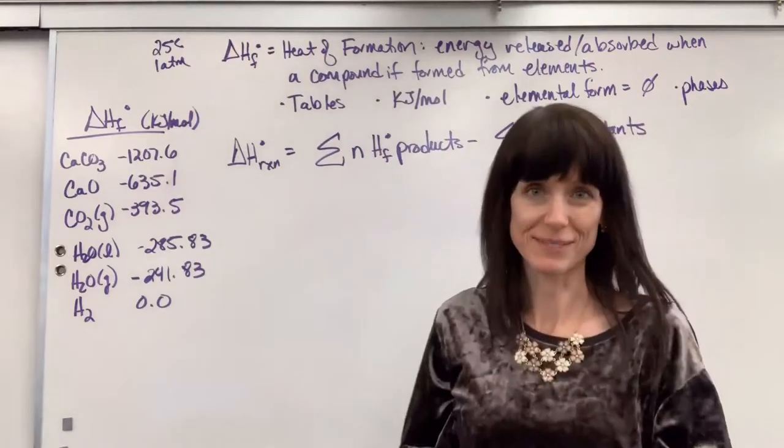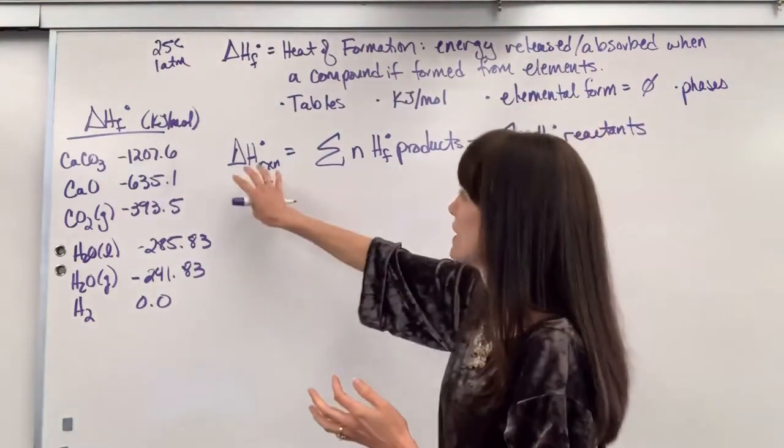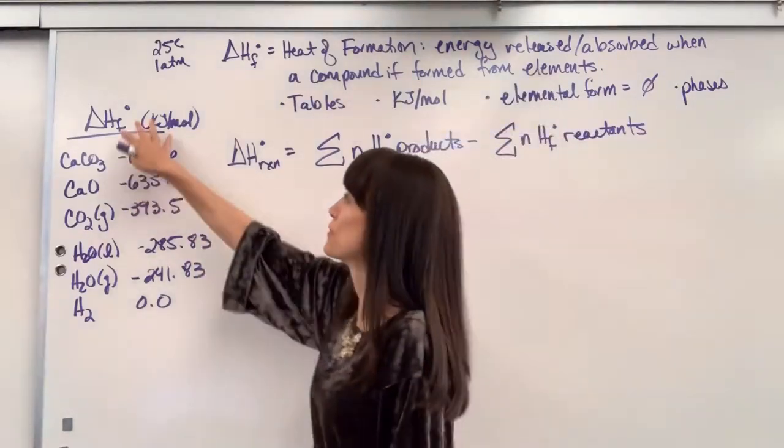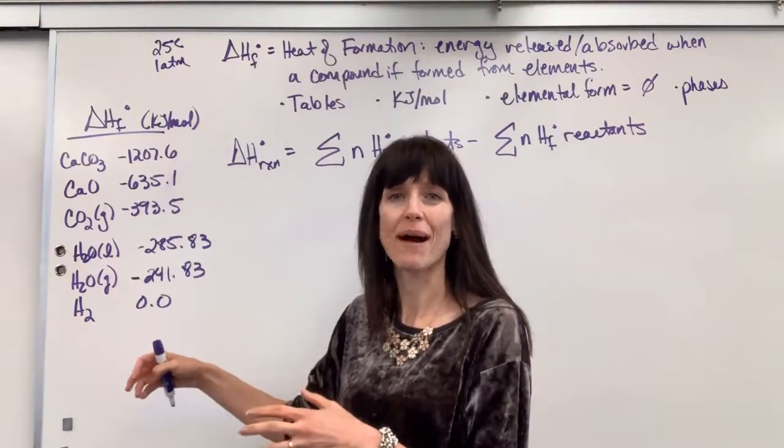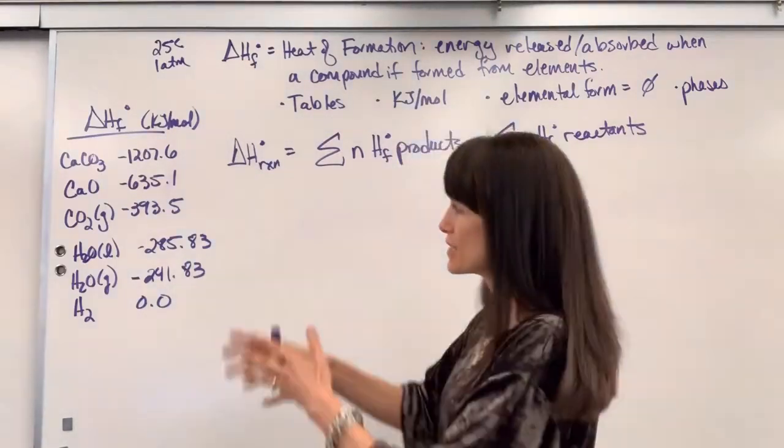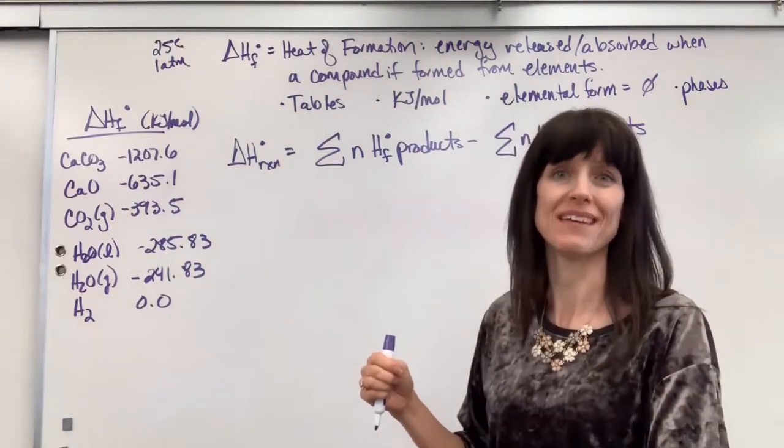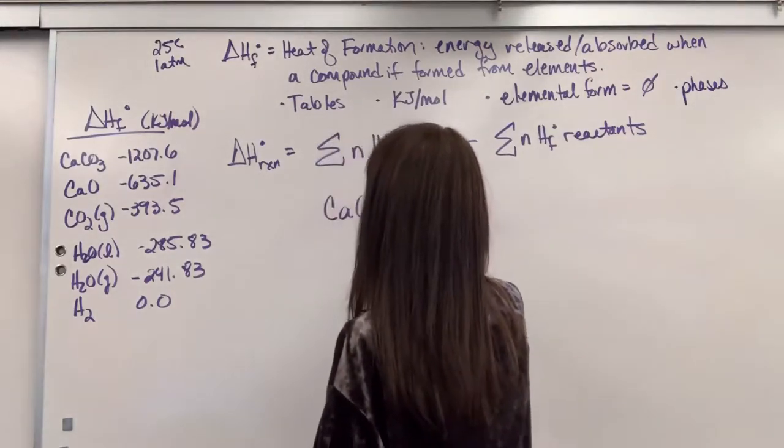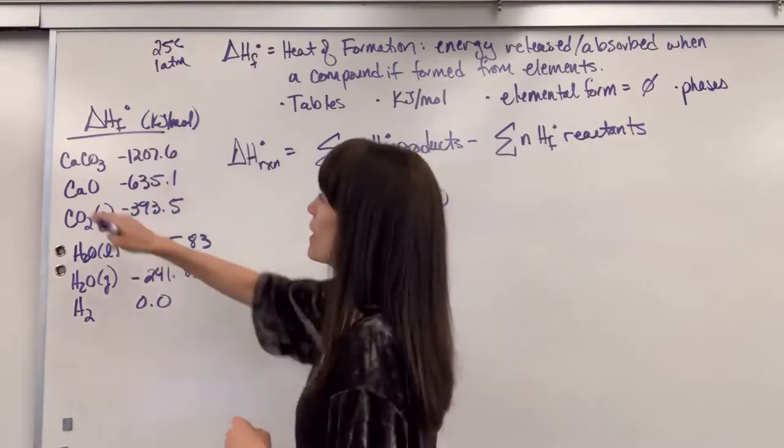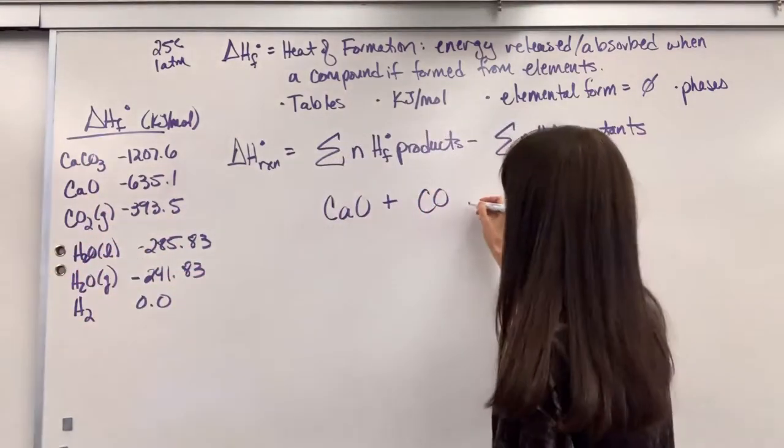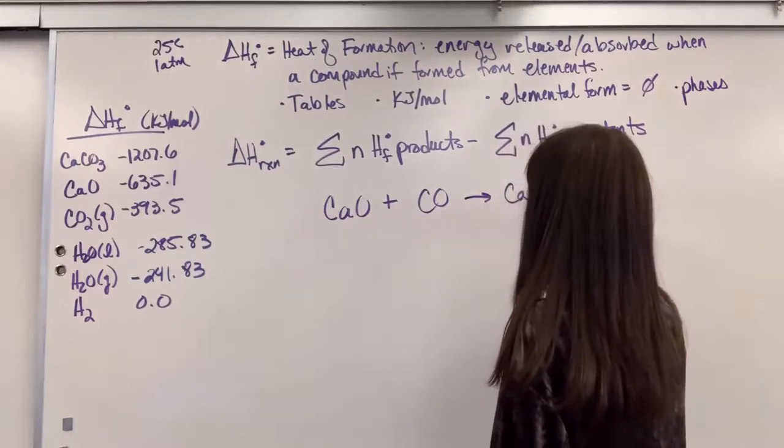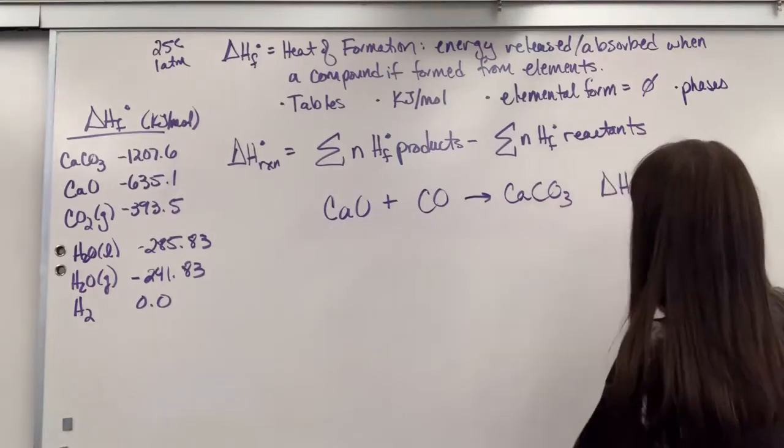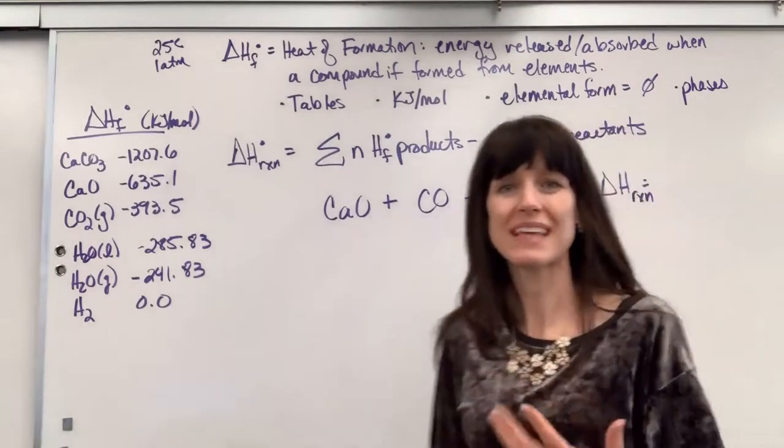Now, taking all of this information, we can find the heat, the enthalpy of a reaction by using the heat of formation of all of the compounds in that chemical reaction. So let's use some of this information that we have here to find the enthalpy for a chemical reaction. We are going to combine calcium oxide plus carbon dioxide, and I've already looked these up for the phases that we needed, yield calcium carbonate. And here's our big question. What's the enthalpy for this reaction?